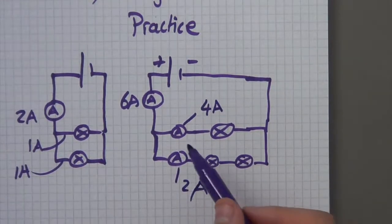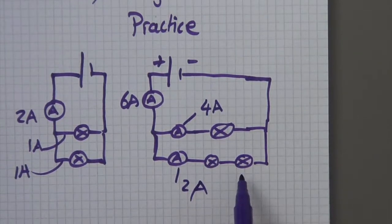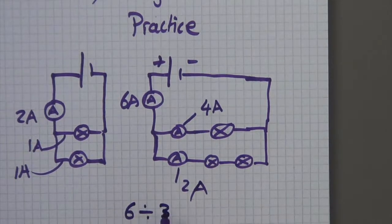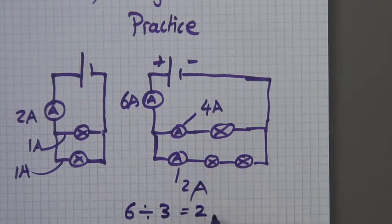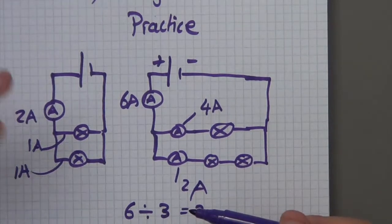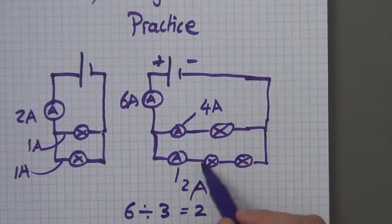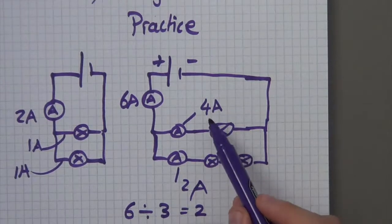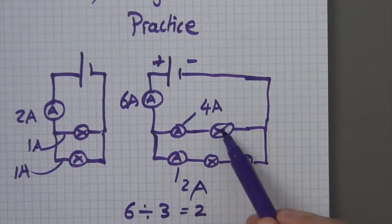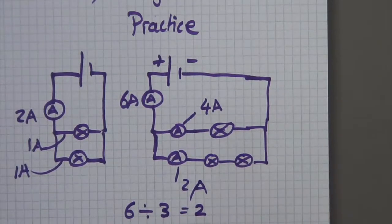Mathematically: there are three lamps in total across both branches, so six divided by three equals two. Then multiply two by the number of lamps in a branch — two lamps on the bottom gives two times two equals four amps on that branch. Or just think in ratios: that branch is twice as difficult, so twice as much current goes through the easier one. Resistance and current are inversely proportional to each other.